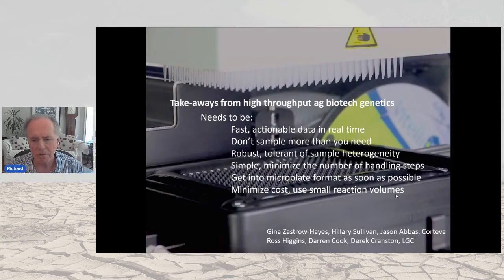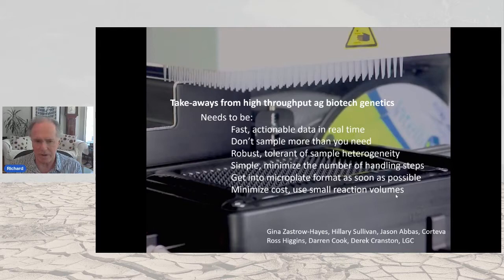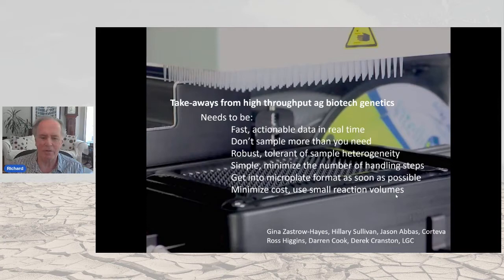In discussions with Corteva before setting this up, the lessons from ag biotech for fast high-throughput screening were: it's got to be quick and actionable with visible data in real time; don't sample more than you need; it's got to be robust and tolerant of different samples; keep it simple, minimize the number of steps, get into microtiter plate format as soon as possible, and minimize costs by using small reaction volumes.